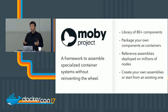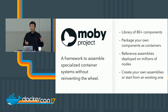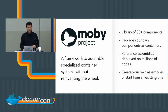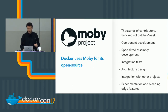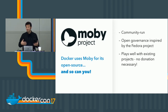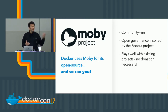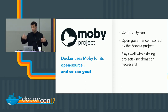Today we're going to talk about Moby a lot. It has a library of 80 components. You can package your own components and bring them as containers. It has reference assemblies — Ralph published the examples Salomon showed on stage yesterday, and I tweeted about it. You can create your own assemblies or create new ones. It has lots of contributors because the Docker codebase moved there, and you can do specialized assembly development. It's a community-run project with open governance inspired by the Fedora project. You don't need to donate your code — it works well with foundations like Apache projects or the CNCF.